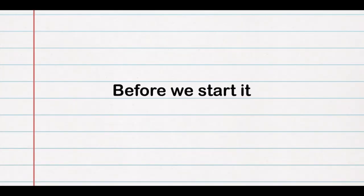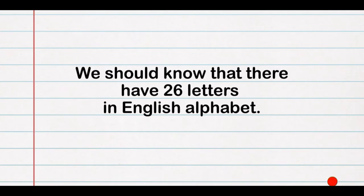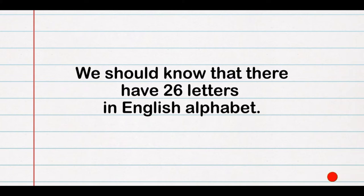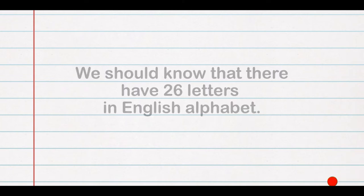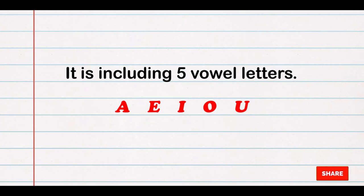Before we start, we should know that there are 26 letters in the English alphabet. It includes five vowel letters: A, E, I, O, U.